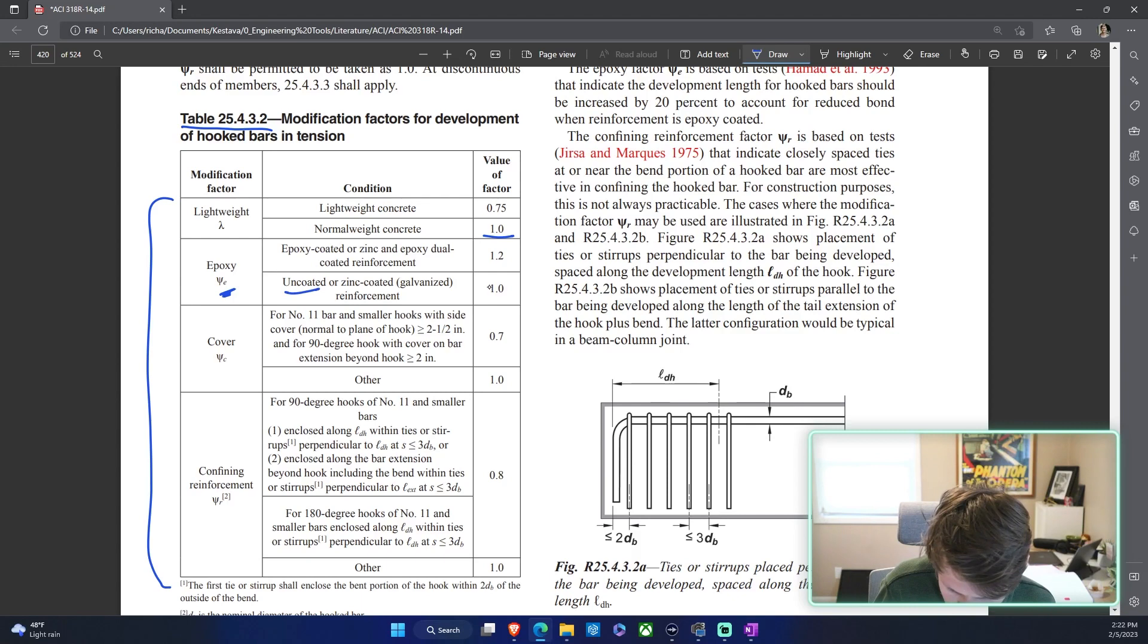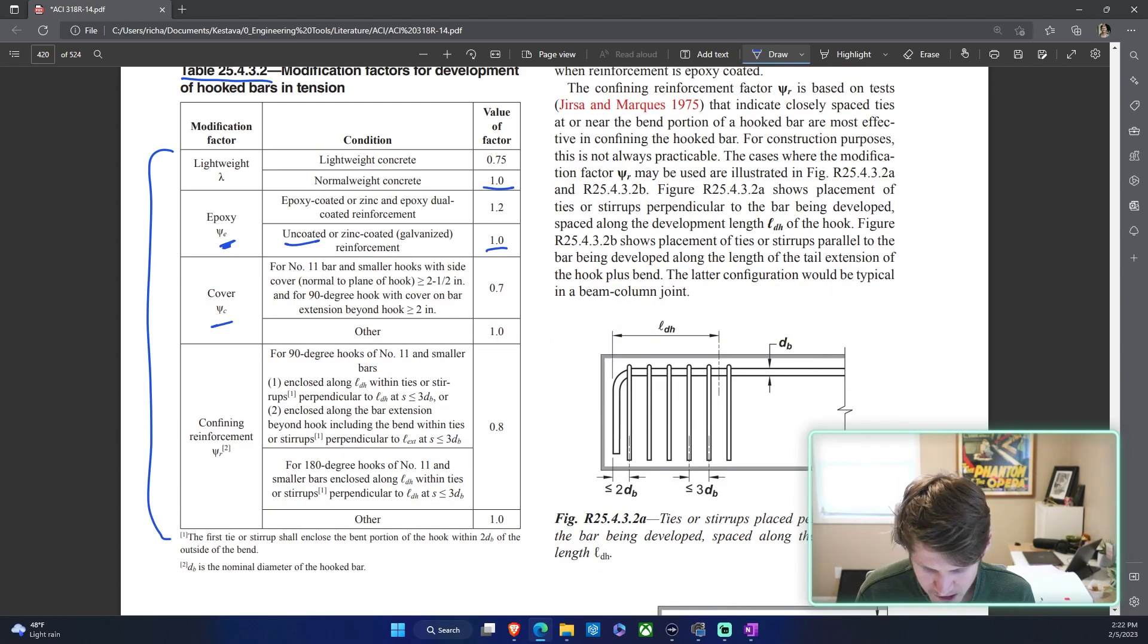Psi_c is cover requirements for your rebar. Number 11 bars and smaller hooks with side cover - we are a number eight bar so this is us - with side cover normal to the plane of the hook greater than two and a half inches. This is talking about our rebar coming in and then those circles of the hooks going in and out of the page. Side cover is two and a half inches from other bars that we're trying to develop.